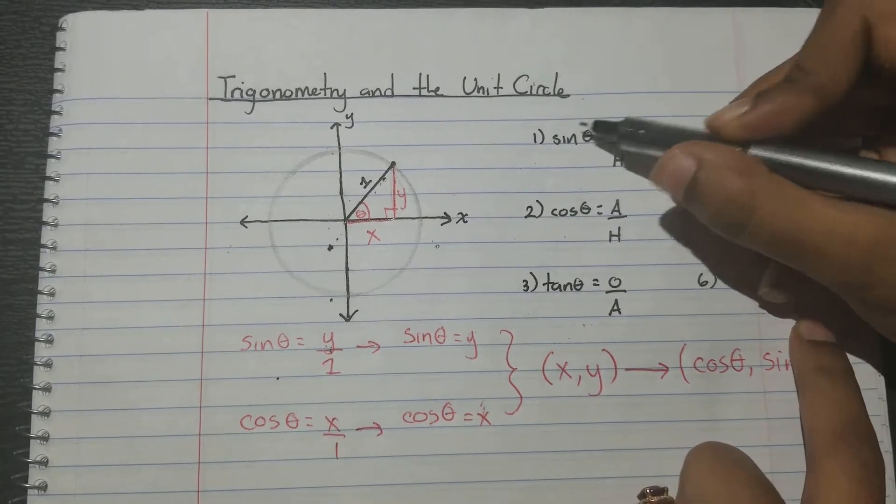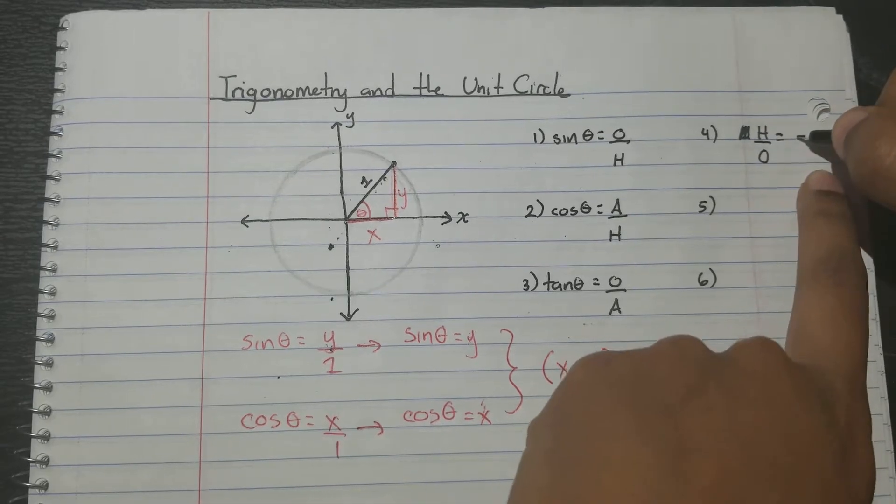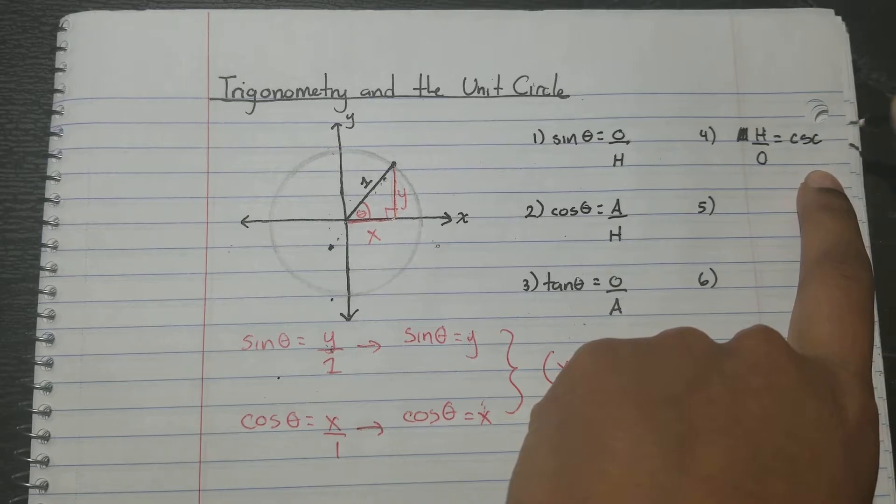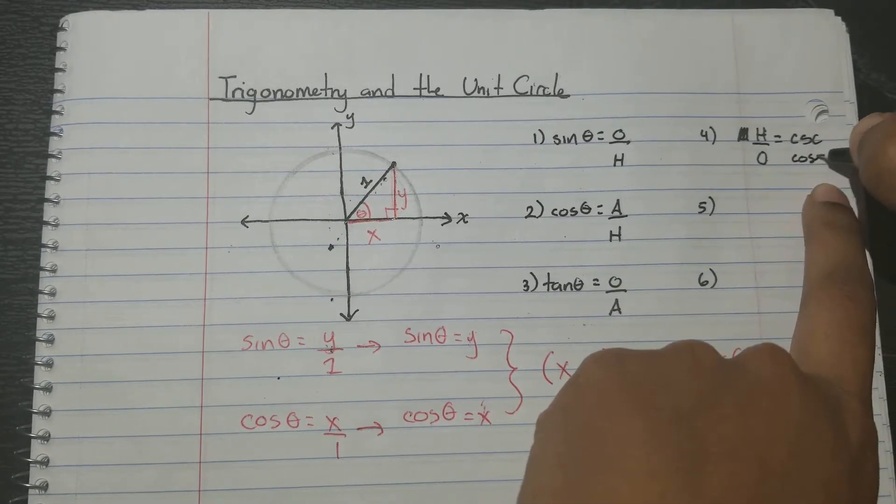So opposite over hypotenuse is sine. Hypotenuse over opposite is what we call cosecant. So that's csc, cosecant.